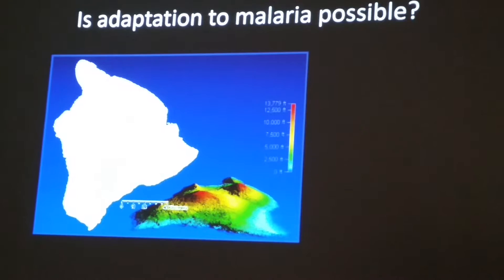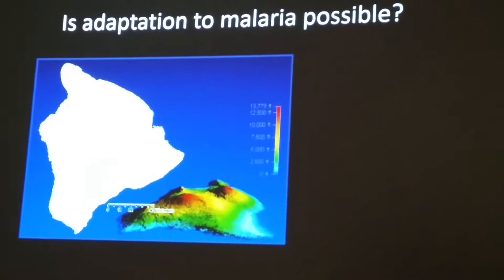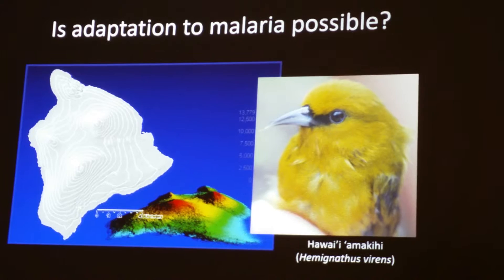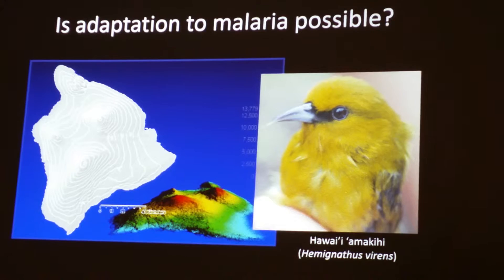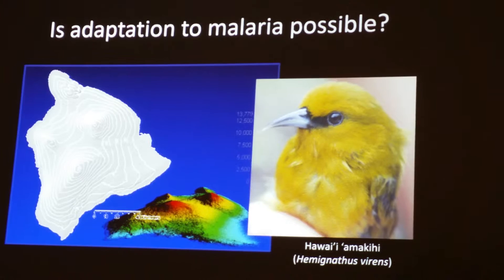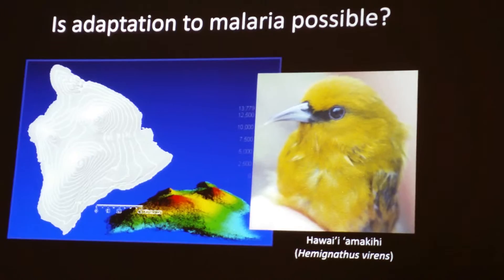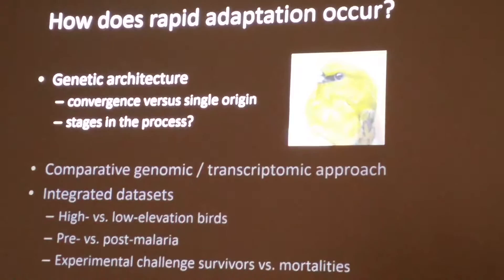So one of our questions is: are we going to lose this spectacular diversity of honeycreepers, or is there any reason to believe there might be a possibility for adaptation to malaria? Today I'll tell you the story of the Hawaii Amakihi, one species of honeycreeper that lives on the island of Hawaii and has evolved tolerance to malaria. By tolerance, I mean they become highly infected with Plasmodium — we can catch them with really high parasitemia — and they live their entire lives with this chronic infection with no known fitness consequences. And this is really incredible because it's been only about 30 Amakihi generations since the introduction of malaria.